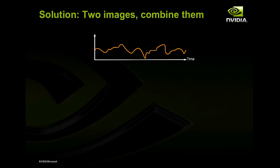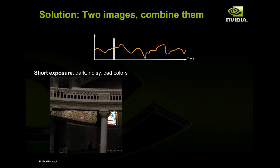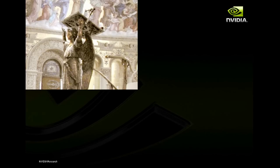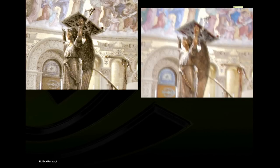Both noise and blur have complementary characteristics you might want to use. Our solution is to take two images and combine them. There's some handshake as you hold the camera — if you take a short exposure you get a noisy but sharp image; if you take a long one you get a blurry image with good colors. In areas that don't have much detail, we get better information from the long exposure. So we can use the complementary information. Here's an example from Stanford Memorial Church: the noisy image, the blurry image, and when we combine them we get something that's much better.